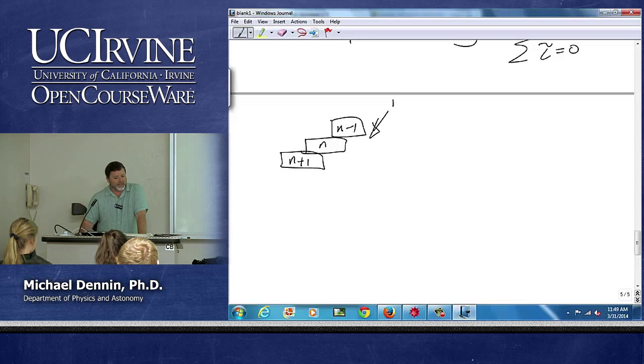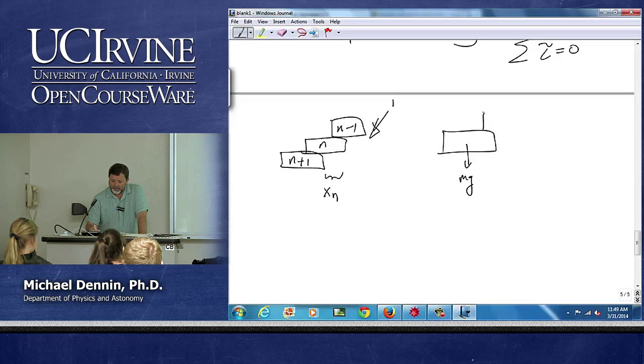The nth block has n blocks on top of it and it's over some distance x sub n from the side. And so it's sitting there, its mg is still in its middle and its normal force is up at some point.